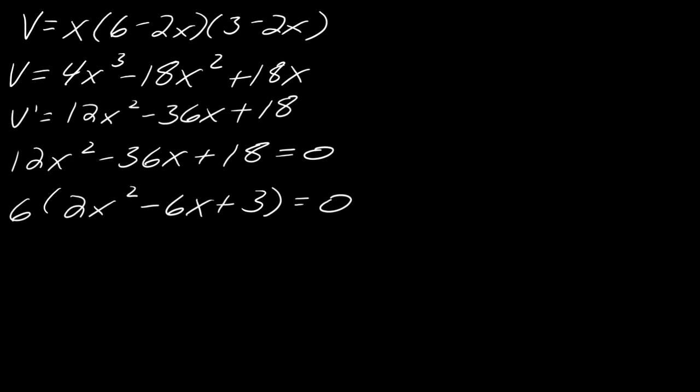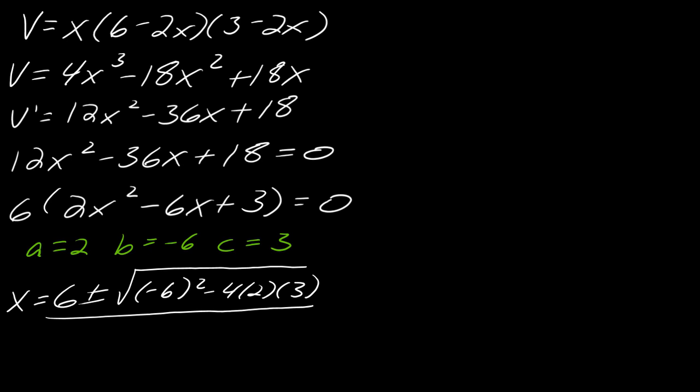So, quadratic formula, so maybe you want to pause the video and just go ahead and find your zeros yourself, and then hit play when you want to check. Okay, so for the quadratic formula, so my a is 2, my b is negative 6, and my c is 3. So, now if I just plug all of this in, so I get 6 plus or minus the square root of negative 6 squared minus 4 times 2 times 3, all of this divided by 4.